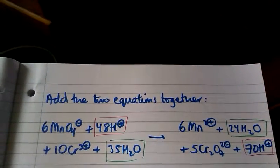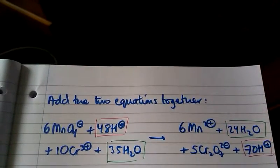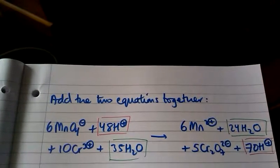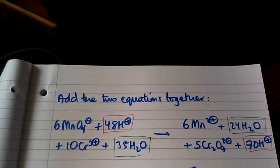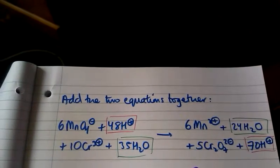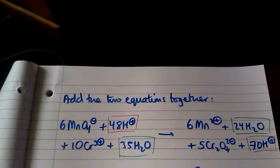From the left hand side we've got 48H plus. If we subtract 48H plus from the left and do the same on the right, we are left with 22H plus.